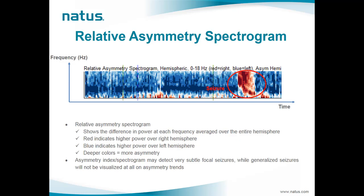The asymmetry spectrogram is similar to a color spectrogram, with frequency on the y-axis, time on the x-axis, and color representing power, but shows the difference in power at each frequency from 1 to 18 Hz averaged over the entire hemisphere. If there is more power on the right at a particular frequency, the spectrogram shows more red signal; if more power on the left, it shows more blue. Perfect symmetry would show no color. Focal seizures over the left hemisphere will be represented by an increase in blue color, while focal seizures over the right hemisphere are represented by an increase in red color.